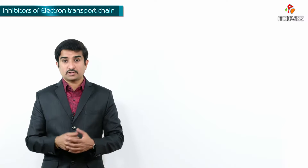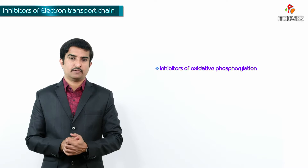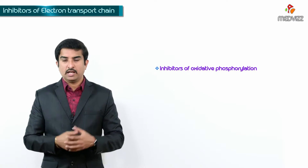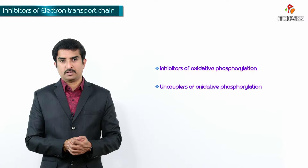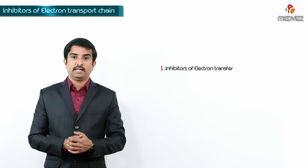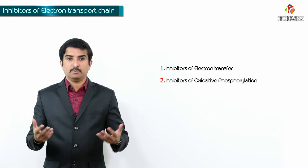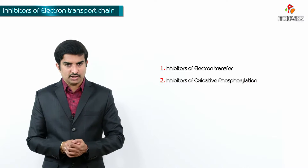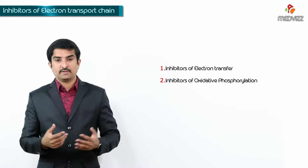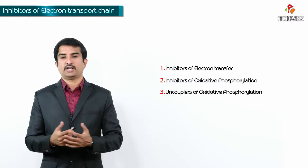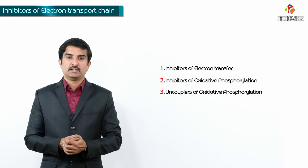In this topic we are going to discuss not only the inhibitors of the electron transport chain, but also the inhibitors of oxidative phosphorylation along with uncouplers. There are four subtopics: inhibitors of electron transfer, inhibitors of oxidative phosphorylation, uncouplers of oxidative phosphorylation, and ionophores.